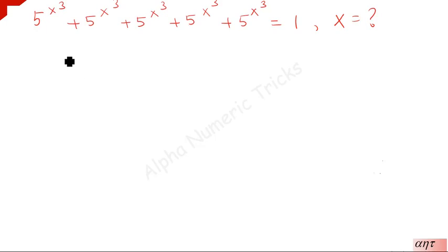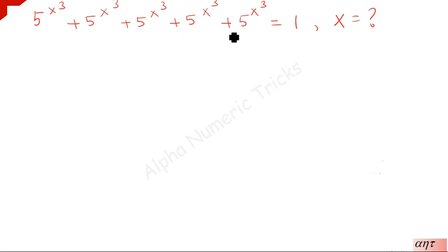Guys, now we are going to solve this problem: phi to the power x cube plus phi to the power x cube plus phi to the power x cube plus phi to the power x cube plus phi to the power x cube is equal to 1. We have to find out the value of x.